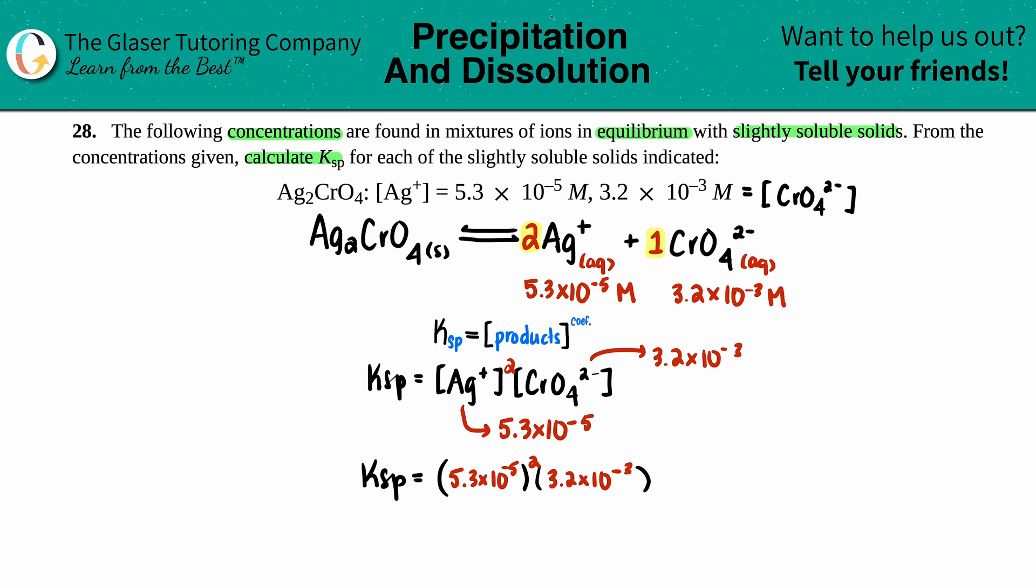Now we could do this all in one shot or you could do it step by step. I'm just going to plug it all in and just get one answer. Let's see if your answer matches mine. So 5.3 times 10 to the negative fifth, that's squared, and then I'm going to times that by 3.2 times 10 to the negative third.